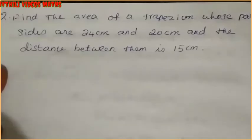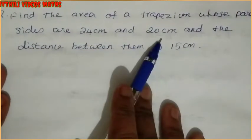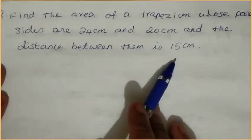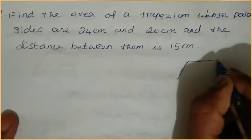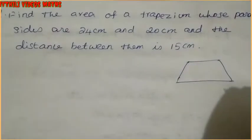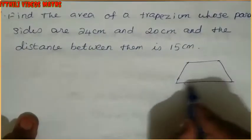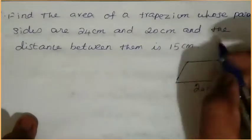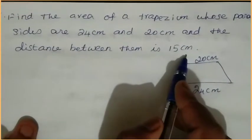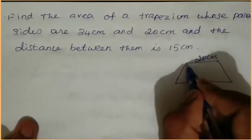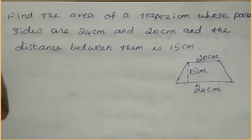The second sum is: find the area of a trapezium whose parallel sides are 24 centimeter and 20 centimeter, and the distance between them is 15 centimeter. So two parallel sides are given, and the distance — that is the height — is 15 centimeter.